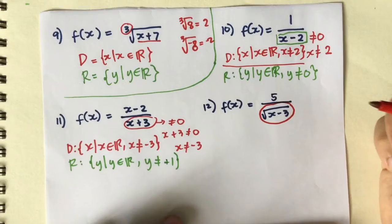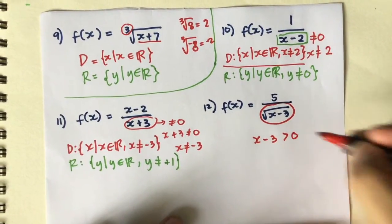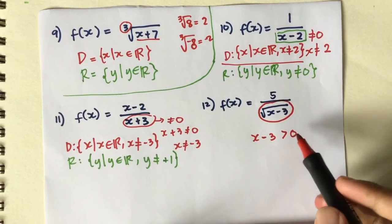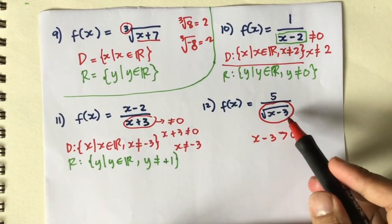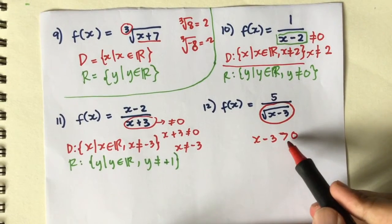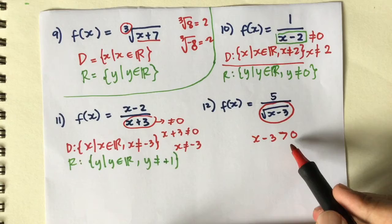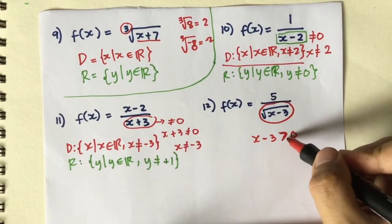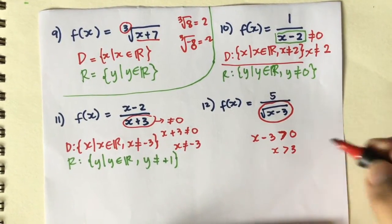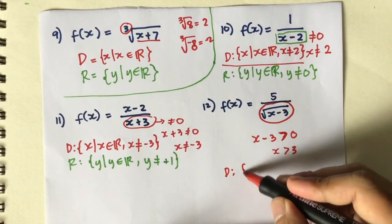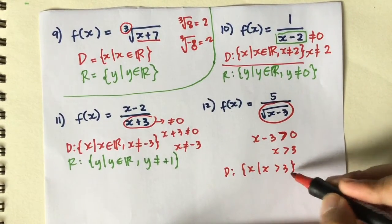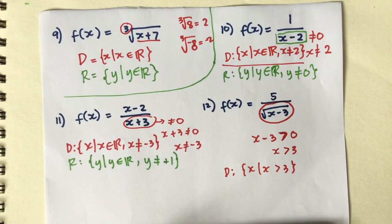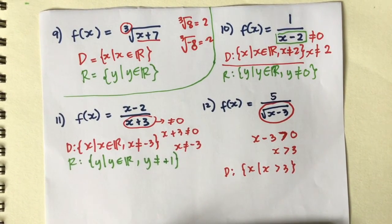For number 12, we are concerned with the denominator, which contains a square root: x - 3 must be greater than 0 — not just not equal to 0, because we also cannot use negative values under a square root. So x > 3. The domain is x such that x > 3, because values less than 3 give a negative under the root, and exactly 3 gives 0 in the denominator.